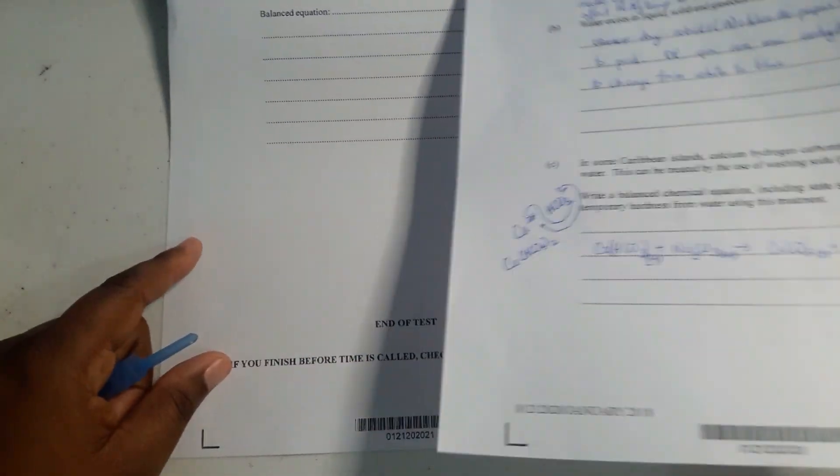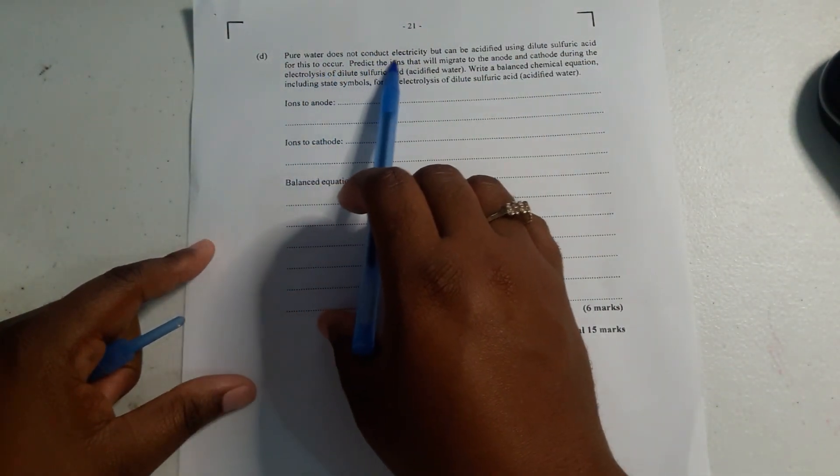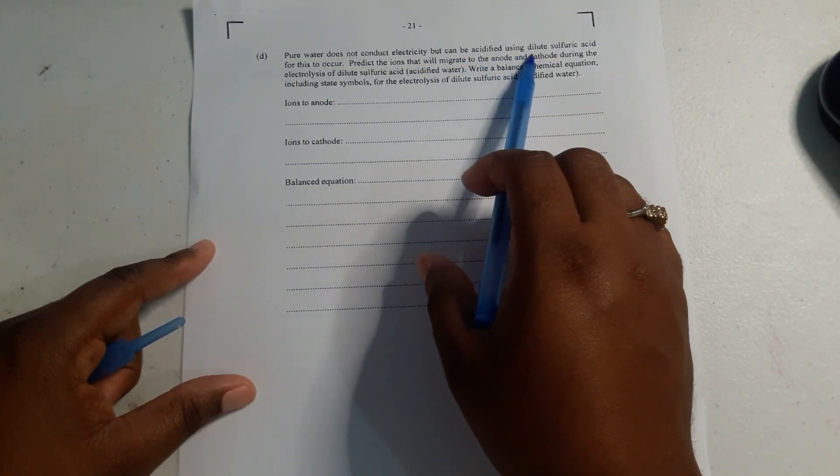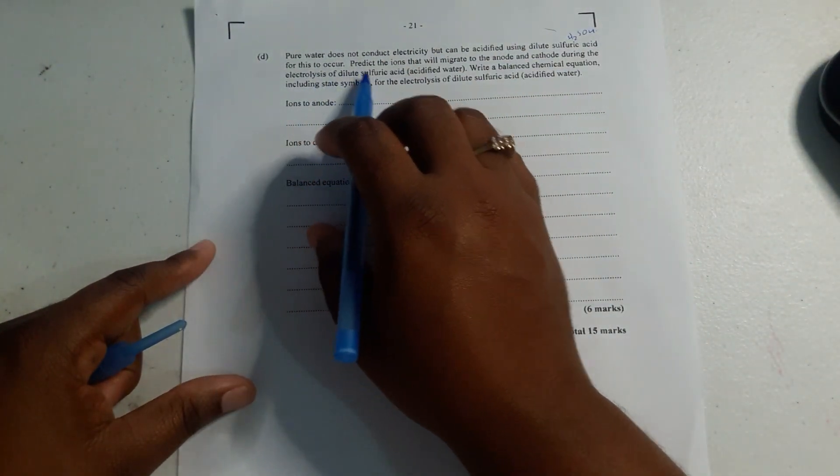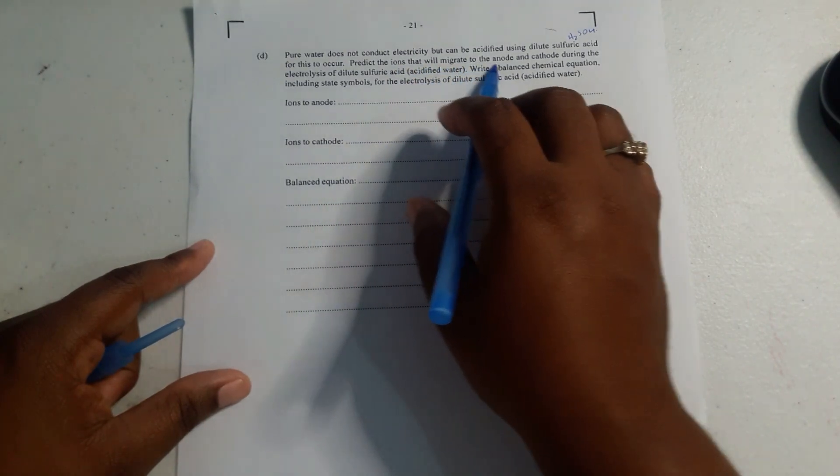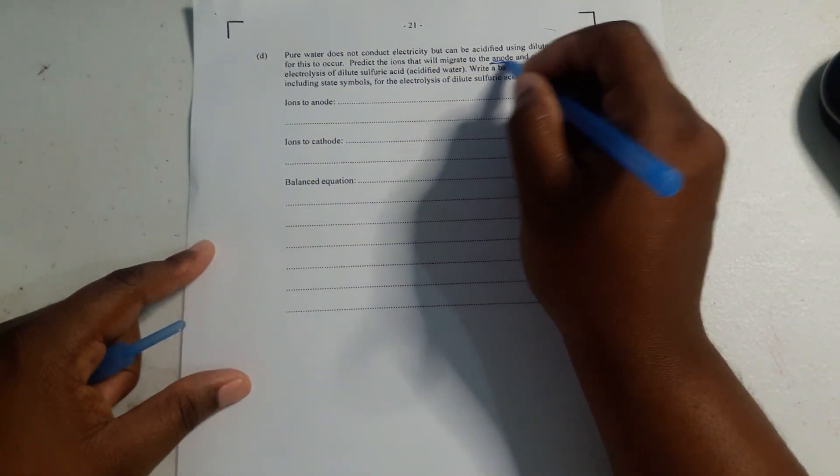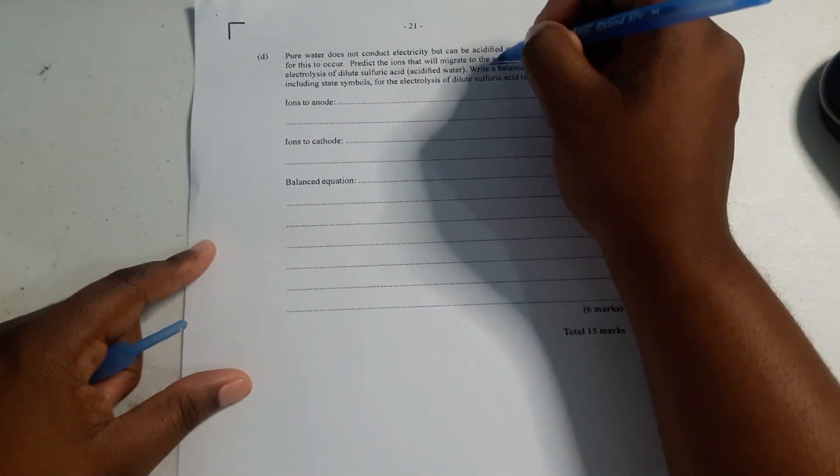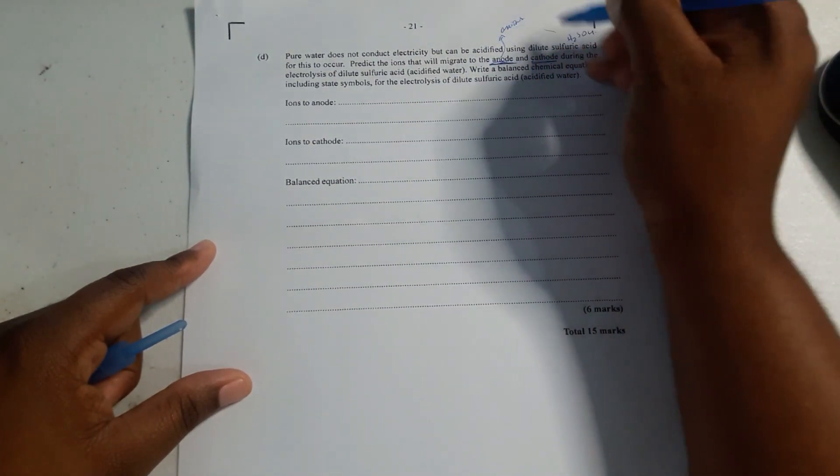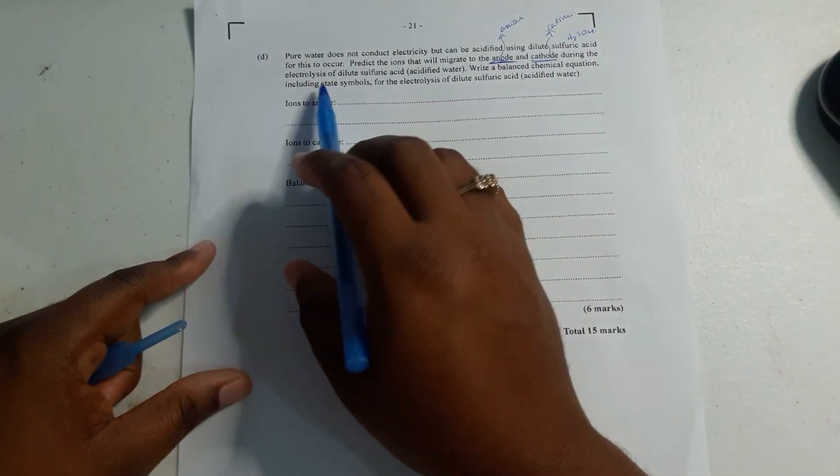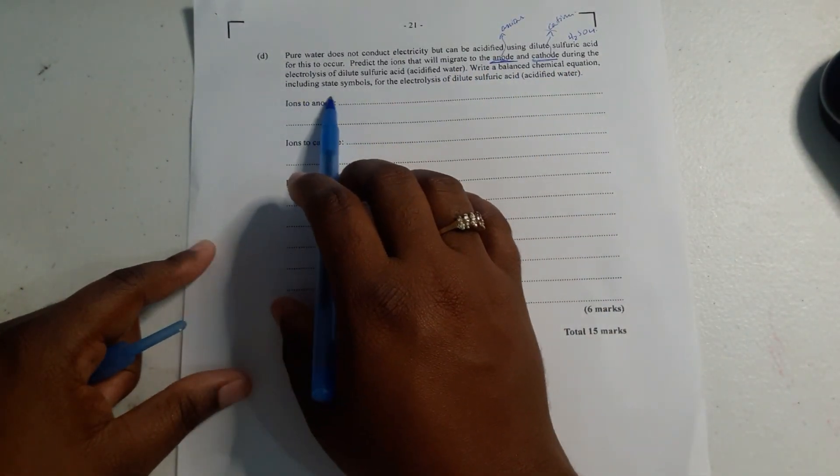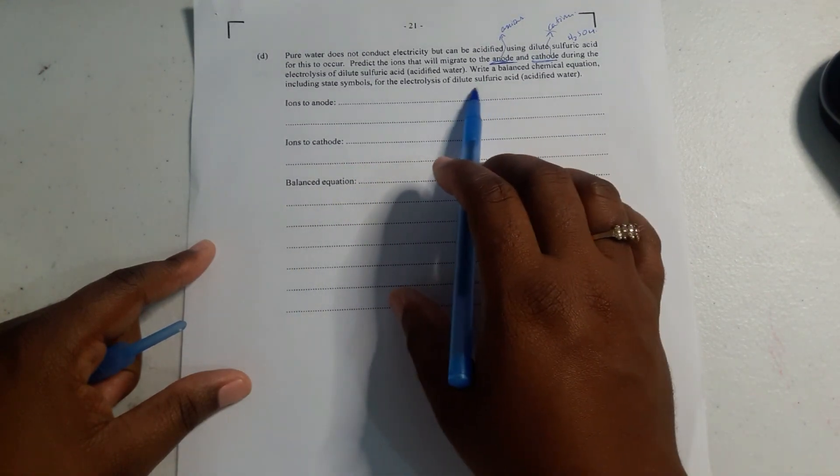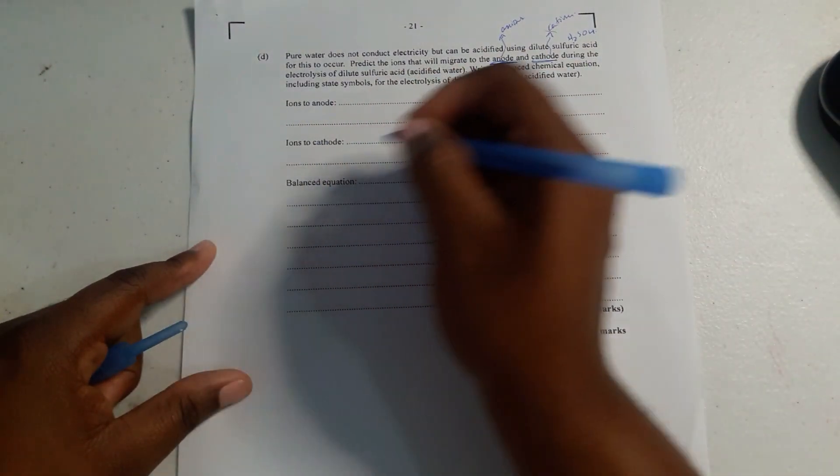Now we have this other question which says pure water does not conduct electricity but can be acidified using dilute sulfuric acid (H2SO4). For this to occur, predict the ions that will migrate to the anode—so we know anions migrate to the anode, and cations migrate to the cathode. You can make a notation here so you remember. Write a balanced chemical equation including state symbols for the electrolysis of dilute sulfuric acid.